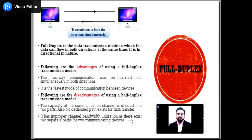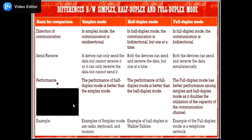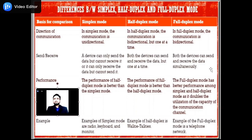Comparison of simplex, half-duplex, and full-duplex mode on the basis of direction of communication: simplex mode communication is unidirectional; half-duplex mode communication is bidirectional but one direction at a time; full-duplex mode communication is bidirectional and both sender and receiver are able to send and receive data simultaneously. On the basis of send and receive: in simplex, a device can only send data but cannot receive it, or it can receive data but cannot send it; in half-duplex, both devices can send and receive but one at a time; in full-duplex, both devices can send and receive data simultaneously.